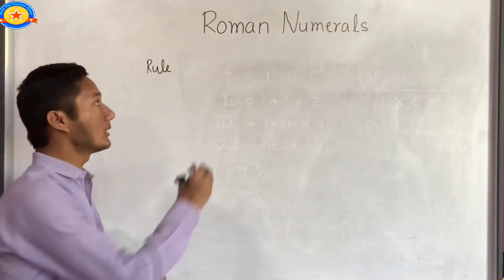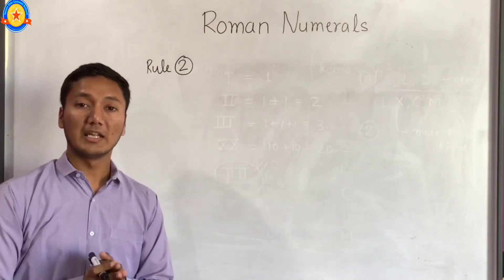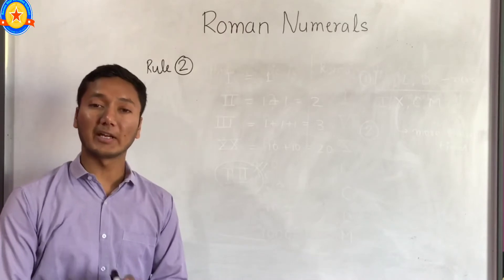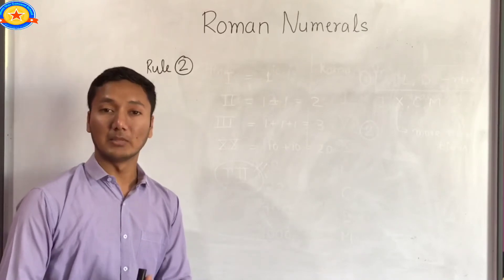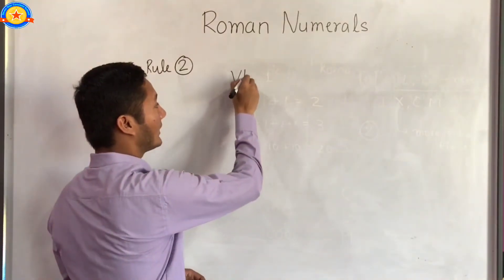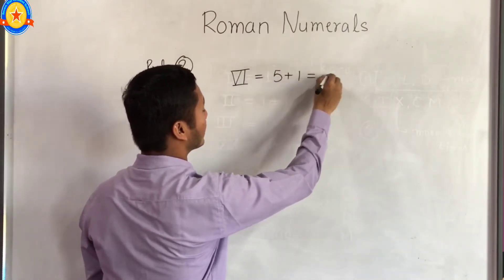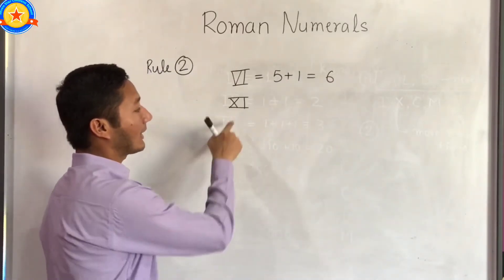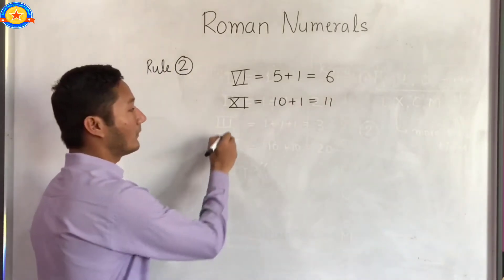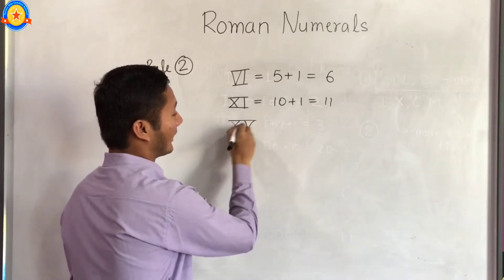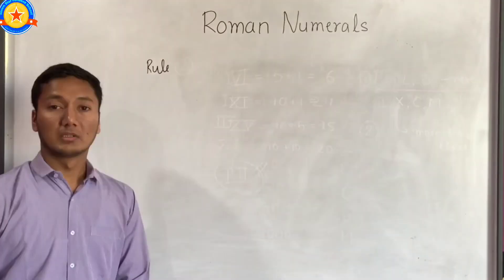Rule number 2: if a symbol of smaller value is written to the right of the symbol of greater value, then we add its value to the value of the greater symbol. For example, VI becomes 5 plus 1 equals 6. XI becomes 10 plus 1 equals 11. XV becomes 10 plus 5 equals 15, etc.